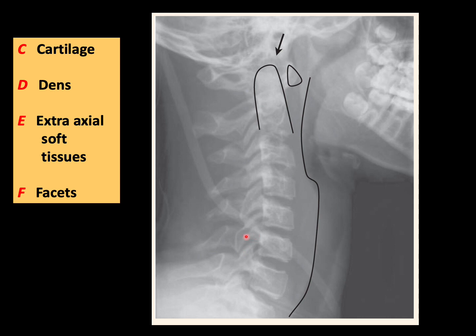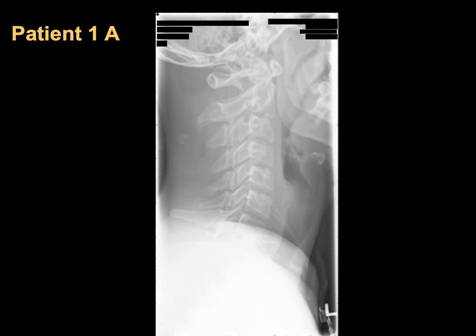F stands for the facet joints, represented by the oblique lines we discussed. Now let's start with our patients. Patient number one is a 20-year-old male who fell while mountain biking, with no neurological deficit.